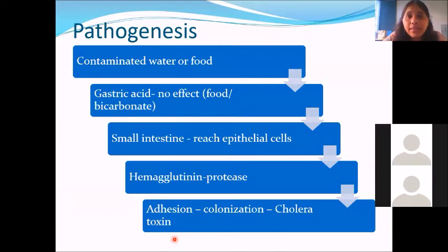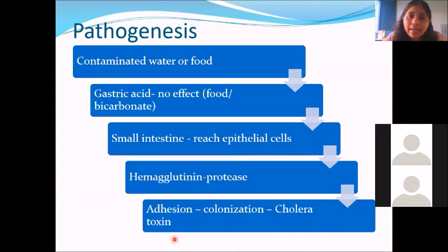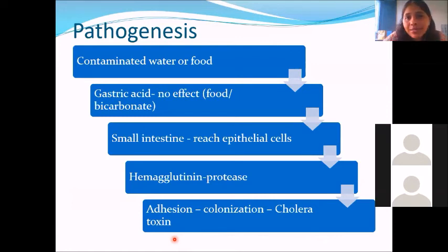Vibrio never invades inside — unlike entero-invasive E. coli, Shigella, or Salmonella, where the organism actually enters inside the epithelial cells and is associated with dysentery. Vibrio does not have the ability to invade inside, and that is why we don't get dysentery in cholera infection — it's always just diarrhea. Diarrhea is only loose, watery stools, whereas dysentery is when stool is mixed with blood, mucus flakes, or detectable leukocytes. Since Vibrio doesn't enter inside, only the cholera toxin it secretes enters and leads to diarrhea.